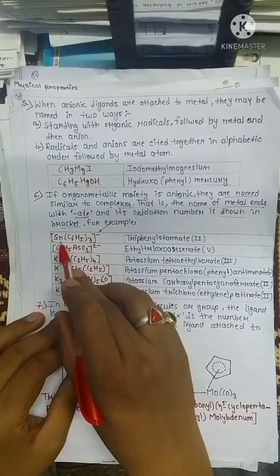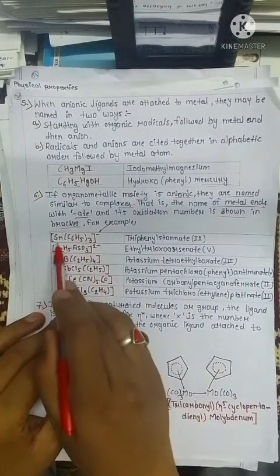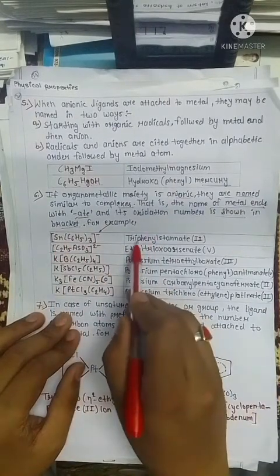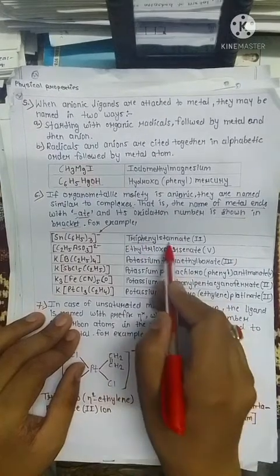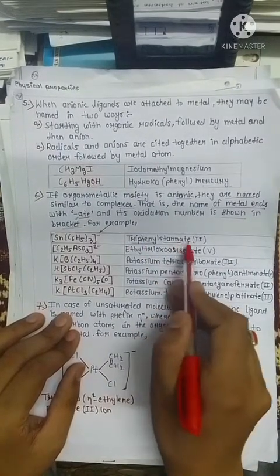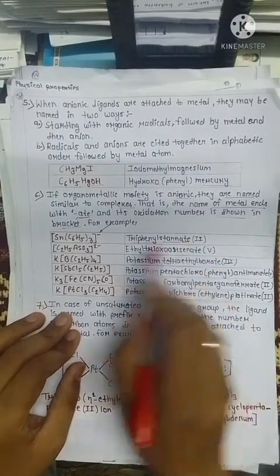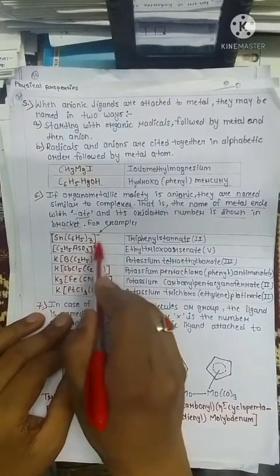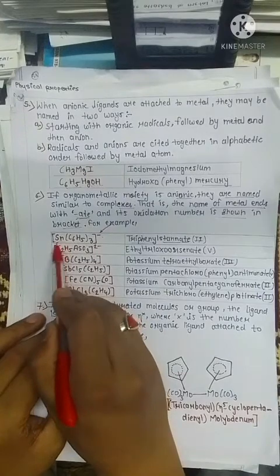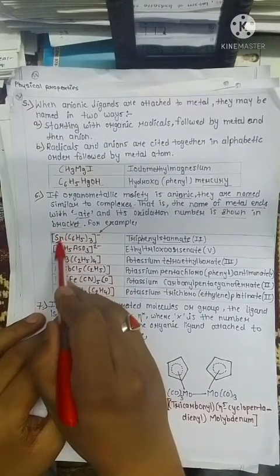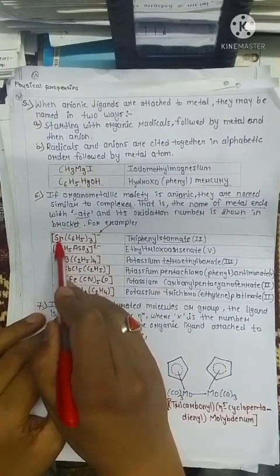To calculate the charge on the metal atom, students should watch the video on coordination chemistry. The name of this compound is written as follows: 3 phenyl groups are attached to the tin (stannous) atom, so it is written as triphenyl. Since there is an overall negative charge, it is written as stannate, not stannous. The Roman numeral in brackets indicates the oxidation state of the central atom.